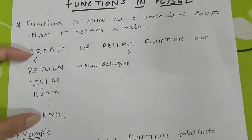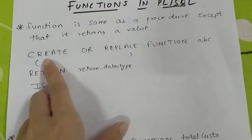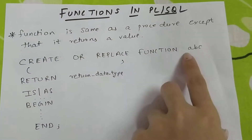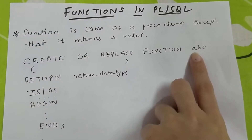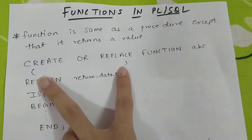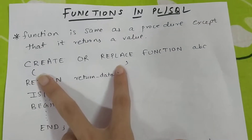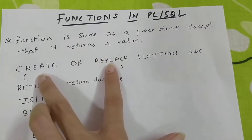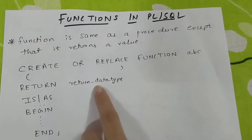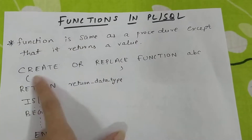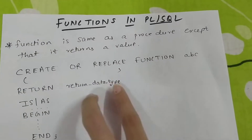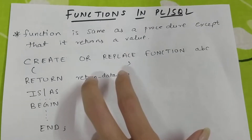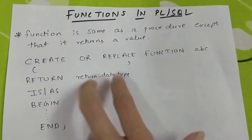This is the basic syntax of functions. You write CREATE OR REPLACE FUNCTION, then the name you want to give the function. Inside brackets you can write your parameters if you want any. Then you write RETURN followed by the data type of whatever value you want to return.